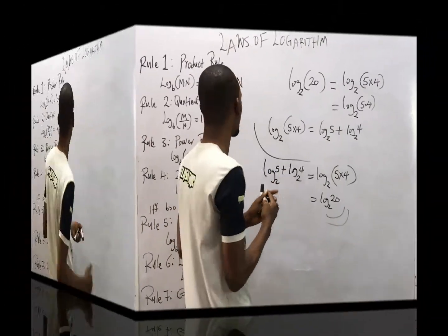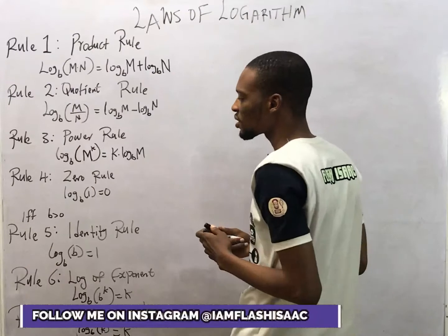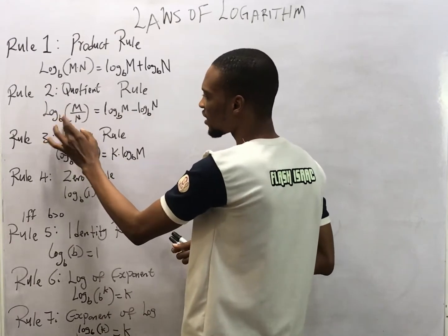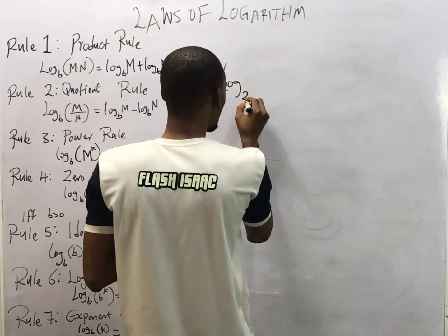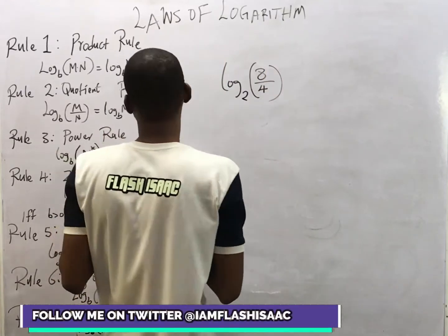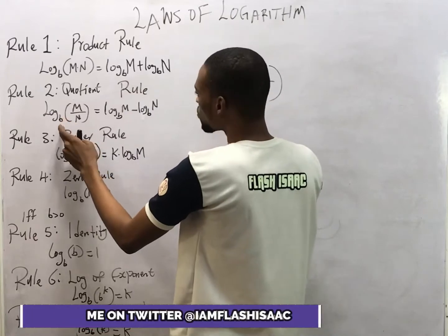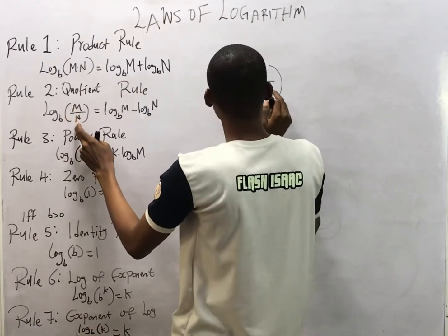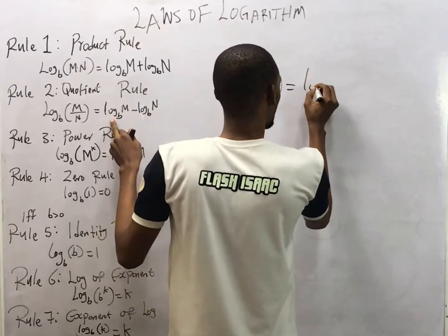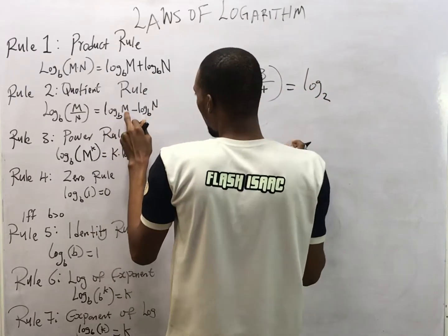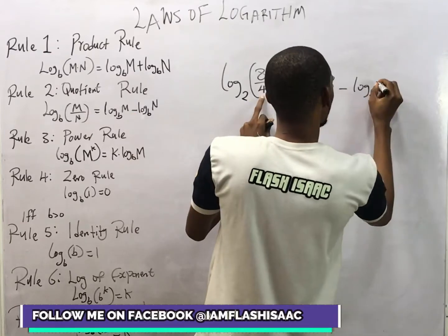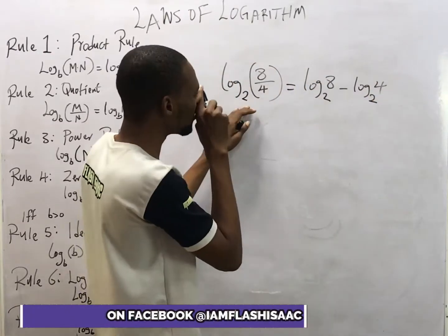That's the first law. The second rule of logarithm is the quotient rule — it talks about division. When you have division you can change it to subtraction. For example, log base 2 of (8 divided by 4): here b equals 2, m equals 8, n equals 4. This is the same thing as log base 2 of 8 minus log base 2 of 4. That's how we change division to subtraction.